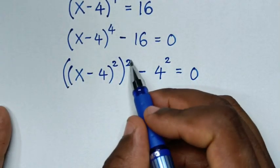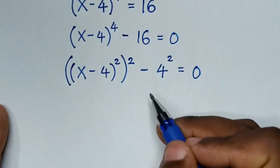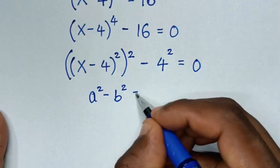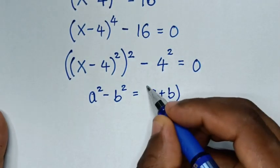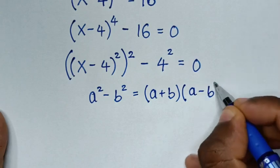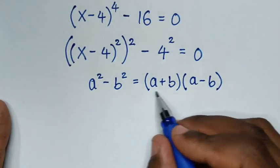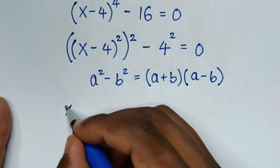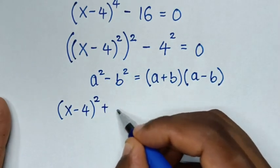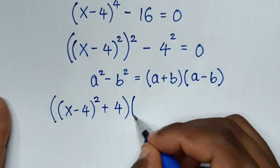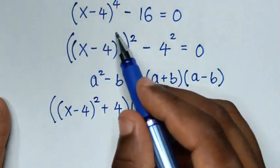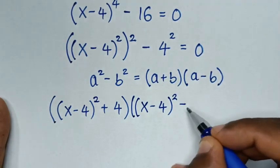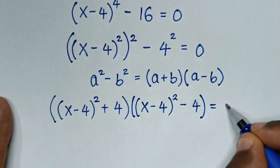Now from here, it's in the form of difference of two squares. So we'll apply the difference of two squares rule, which is a squared minus b squared equals (a plus b)(a minus b). Applying this: (x minus 4) bracket squared plus 4, multiplied by (x minus 4) bracket squared minus 4, is equal to 0.